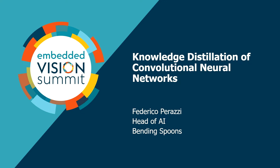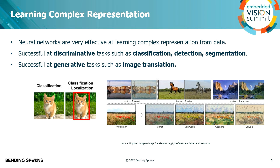Today I'm going to talk about knowledge distillation of convolutional neural networks. Neural networks are very effective at learning complex representations of data. For example, they've been really successful at discriminative tasks like classification, detection, and segmentation.